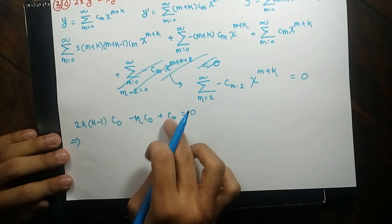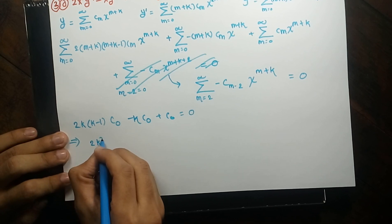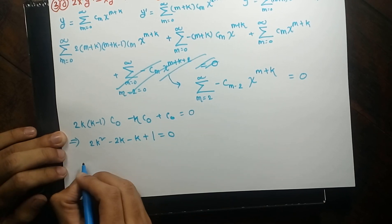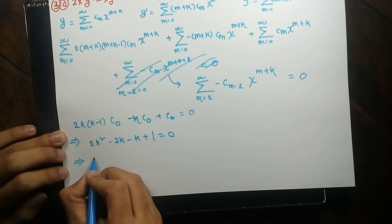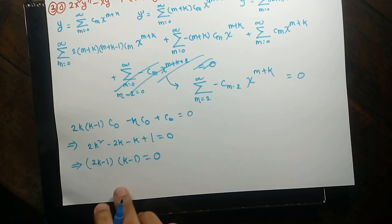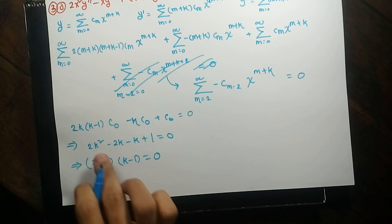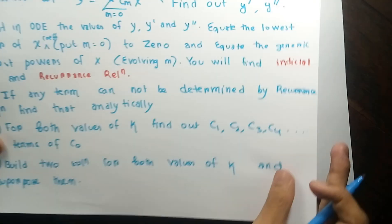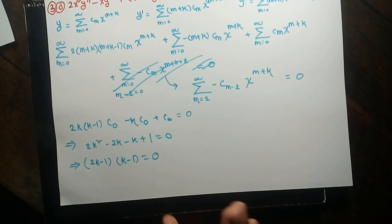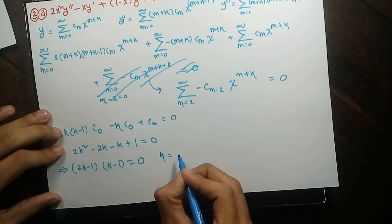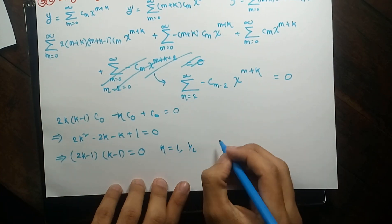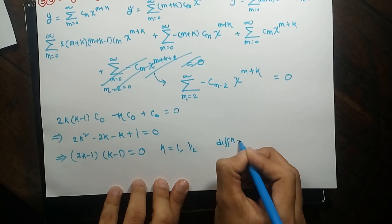Cancelling c₀, I get 2k² − 2k − k + 1 = 0, which factors as (2k − 1)(k − 1) = 0. This equation involves only k and is quadratic — it is called the indicial equation. The indicial equation gives the values of k: k = 1 and k = 1/2. The difference between the roots is 1/2, which is not an integer.